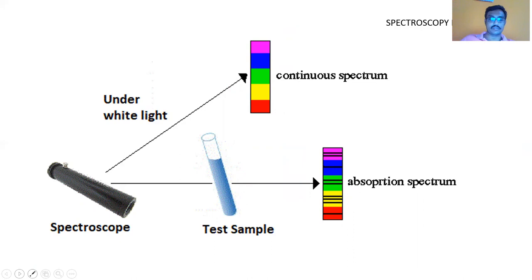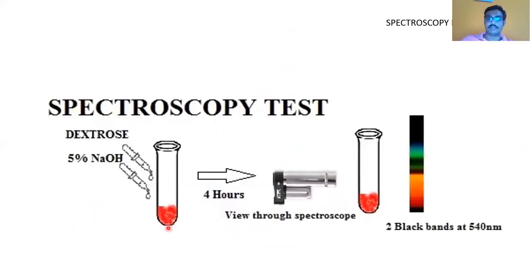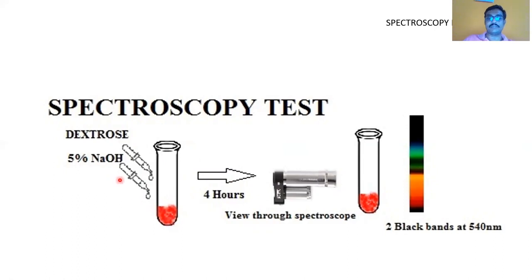We also use this in forensic biology. For example, suppose we have a sample suspected to be blood — a pink or red stain at a crime scene. A simple spectroscopy test can be used: take the blood sample, add 5% sodium hydroxide and dextrose, leave it for four hours at room temperature. You are essentially breaking down the hemoglobin in an alkaline medium. Then view that solution through a spectroscope. You will get an absorption spectrum showing yellow light being absorbed because the hemoglobin is broken down. If the hemoglobin is broken, it means the sample is blood. You will see two distinct black bands around 540 nanometers, which is a confirmatory test that the sample contains blood.